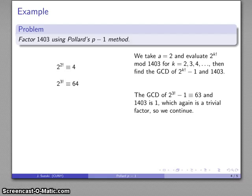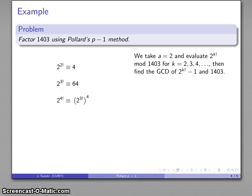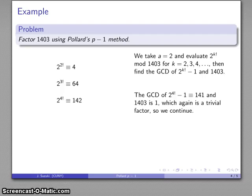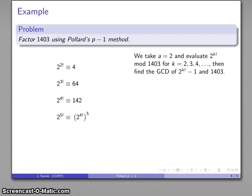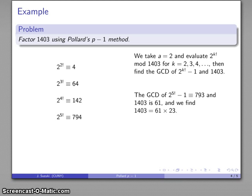So I'll continue and find the next term. 4 factorial is the previous to the fourth power, which gives 142. I'll find the greatest common divisor of the number minus 1 and the number of interest. Again, 1. So I'll continue. The next greatest common divisor of the number minus 1 and 1403 is 61, which tells me that 61 divides both of these. 61 divided into 1403 gives us the other factor.